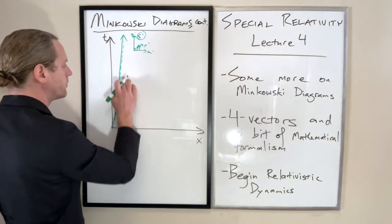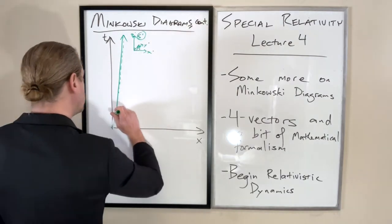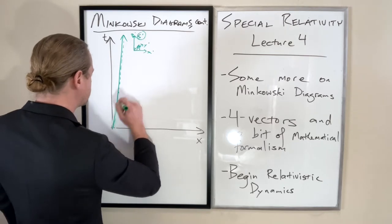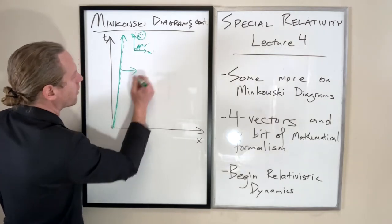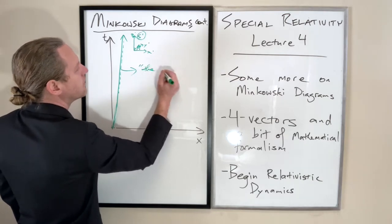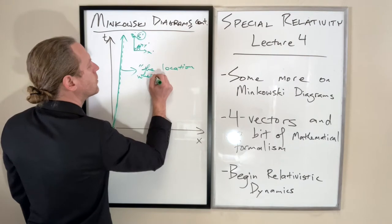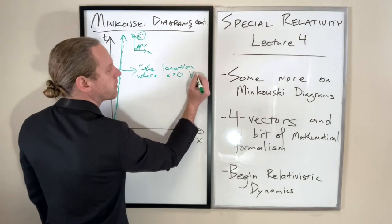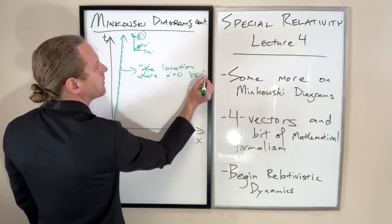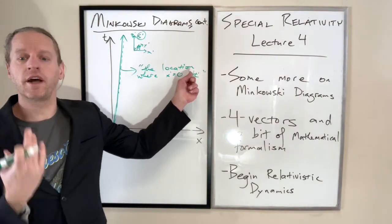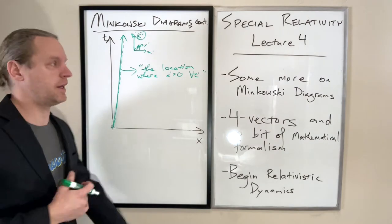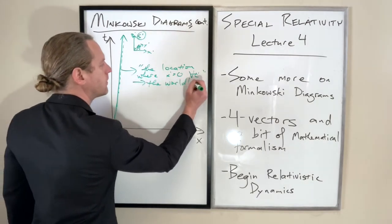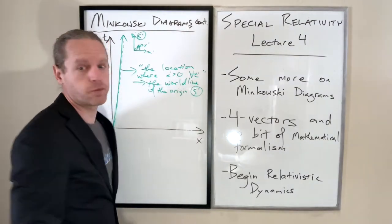This becomes the location of the origin. Another way of saying that, using set theory notation: this is the location where x prime equals zero for all time t prime. It's the world line of the origin in s prime.